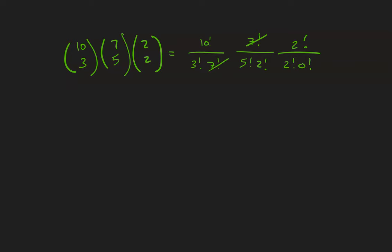The 7 factorials cancel, the 2 factorials cancel, and 0! = 1, turning this into 10!/(3!·5!·2!).